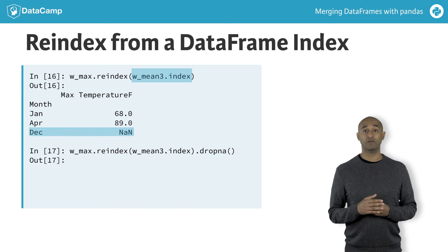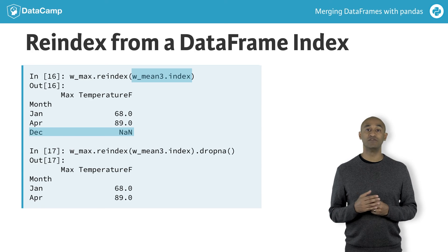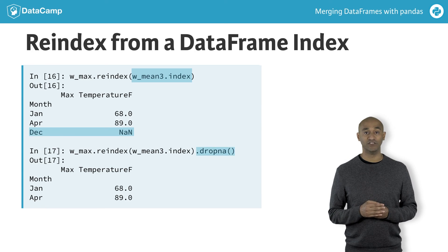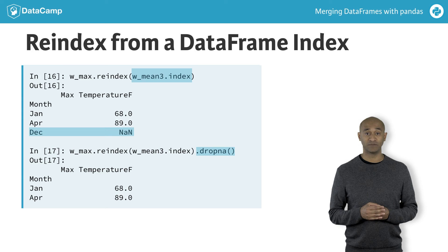Using the method dropna removes entire rows in which null values occur. This is a common first step when merging data frames.